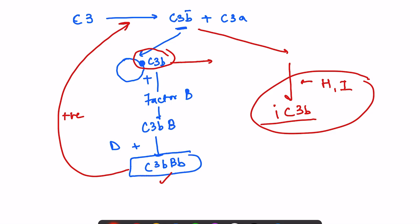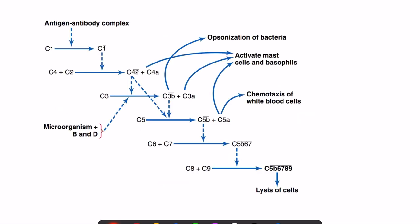The third pathway is the mannose-binding lectin pathway. In this pathway, the protein mannose-binding lectin can directly activate C4, C2, and C4̄2̄. All three pathways — classical, alternate, and mannose-binding lectin — converge on the formation of C3B.